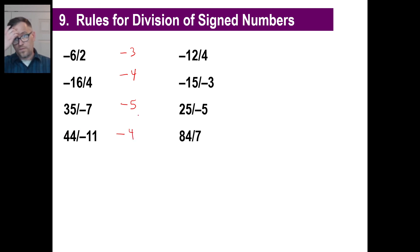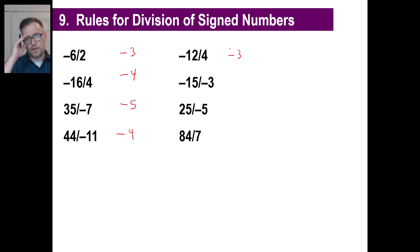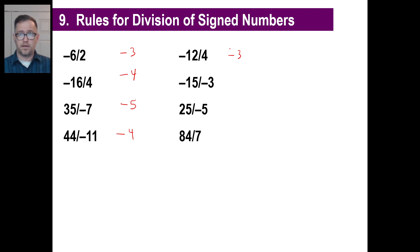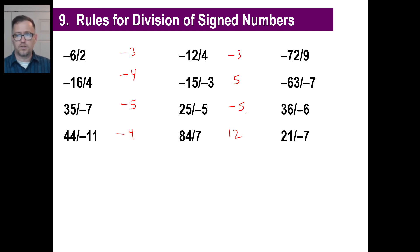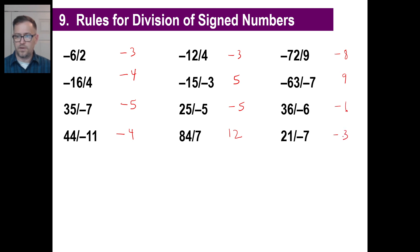Let's try another: negative 12 divided by 4 — cut negative 12 into 4 pieces, each is negative 3. How many negative 3s fit into negative 15? If you line up 5 negative 3s you get negative 15, so the answer is positive 5 — same signs. 25 divided by negative 5 — opposite signs, so negative 5. 84 divided by 7 — both positives, so positive 12. Now pause and try these four practice problems on your own.